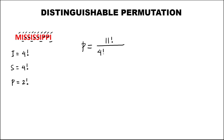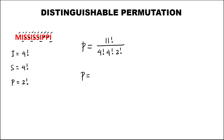So the permutation is 11 factorial divided by (4 factorial times 4 factorial times 2 factorial), which equals 34,650. So there are 34,650 ways to arrange all the letters in this given word.